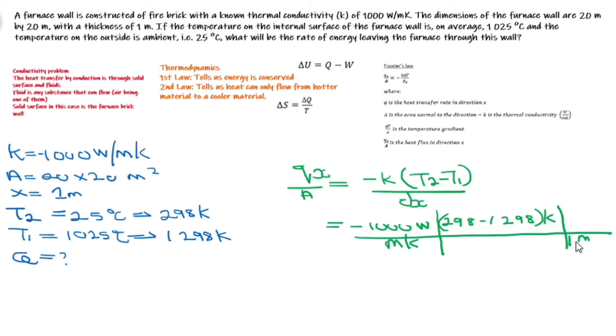On the left-hand side, we have area, which is given to be 20 times 20 meters squared. If we punch this into our calculator, we should get a million watts per meter squared. And on this side, we are left with heat flux, which is Q over area, and this should give you 400 meters squared.